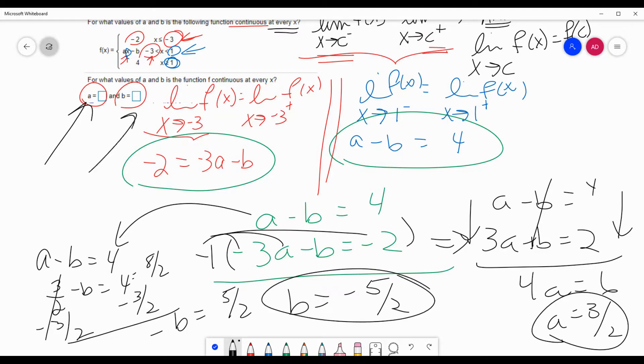All right, so guess what we just found? We found our a to be 3 halves. We found our b to be negative 5 halves. So as long as a and b are those values, then you've got yourself your answer. Sound good? What I mean to say is you have a continuous function. It's been a crazy morning. All right, well this is the Math Dealer. I hope this was helpful. Signing off. Arrivederci.